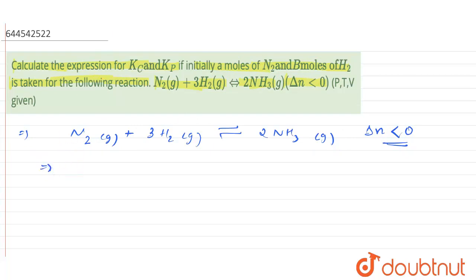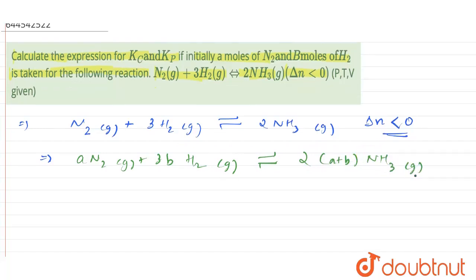So the modified equation would be A moles of nitrogen gas plus 3B moles of hydrogen gas in equilibrium will give me 2 into (A plus B) moles of NH3 gas. So this will be the modified equation.